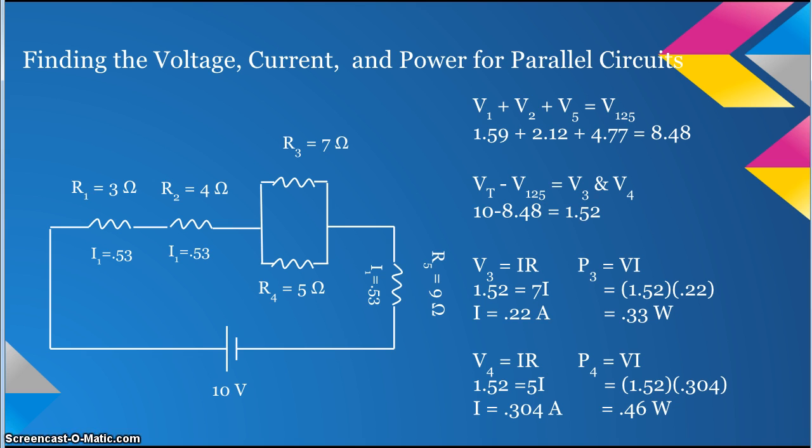Now that you have the current for R3, you can find the power by using the equation P equals VI. P3 equals 1.52 times 0.22, which equals 0.33.